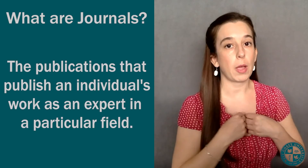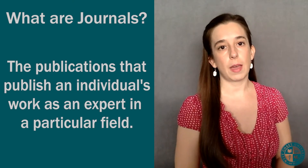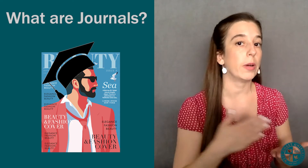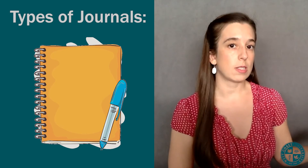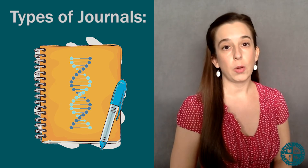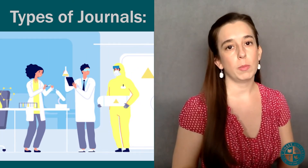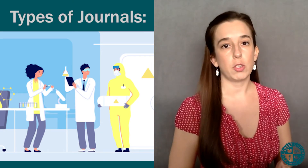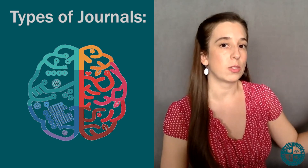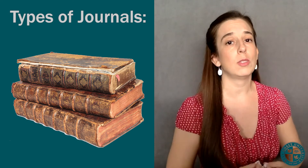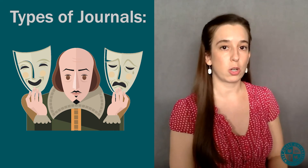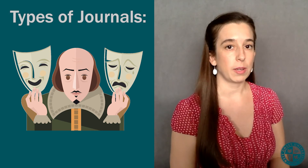Now let's talk about our journals. Journals are the publications that would potentially publish my work as an expert in a particular field. You can almost think of them as highly academic magazines that get published periodically. There are journals for all kinds of fields. For instance, you might have a journal that focuses just on the biological sciences, or one that focuses exclusively on neuroscience, or one that focuses on 17th century literature. You could even have one that focuses exclusively on Shakespeare, meaning that every single paper published to that journal will have something to do with the study of Shakespeare. So journals can be fairly broad in their scope or they can be very narrow.